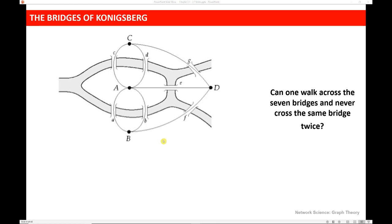What Euler did was represent the bridges and the river as a graph. Here we can see that graphical representation. The points A, B, C, and D we're going to refer to as nodes. These nodes represent the land that is separated by the River Pregel. There's a connection between each node wherever there's a bridge, and we're going to refer to these as edges. Using the first ever mathematical proof related to graph theory, Euler showed that you can't actually walk across all seven bridges and never cross the same bridge twice.